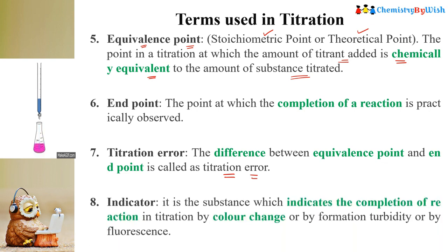The next term is indicator. An indicator is a substance which shows us that the reaction is completed by a change in color. It is a substance which indicates the completion of a reaction in a titration by color change, or by producing turbidity, or by fluorescence — depending on which type of titration you are doing.